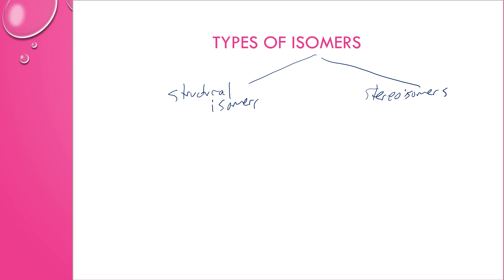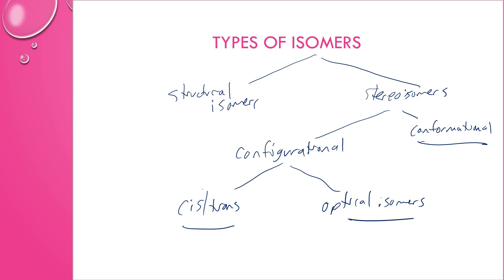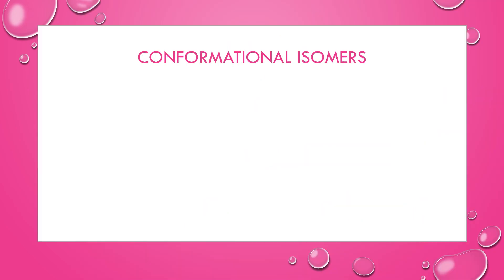Stereoisomers can be categorized into two major types. Conformational isomers, which involve rotation around a single bond, and configurational isomers. Configurational isomers have different configurations, but they are categorized further into cis-trans isomers and optical isomers. We're going to look at conformational, cis-trans, and optical isomers today. Conformational isomers involve the free rotation of a single bond.